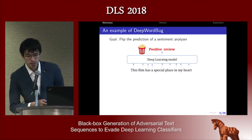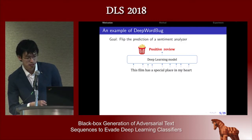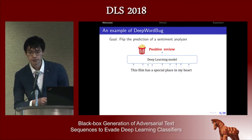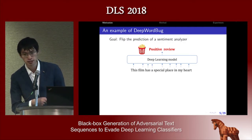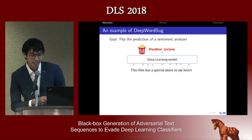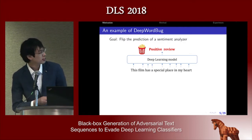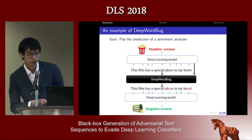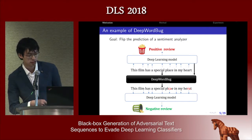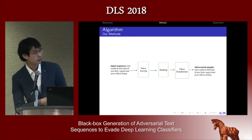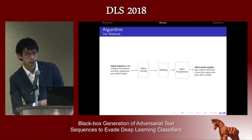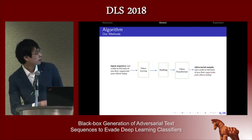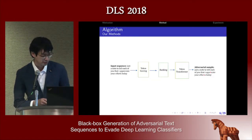The application scenario is like this: we want to flip the prediction of a sentiment analyzer. At first, this deep learning model gives correct answers. When we send the model and the input into our Deep World Bug system, it will generate some slight difference in the input and flip the prediction to the negative review.